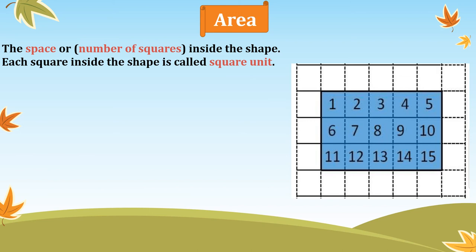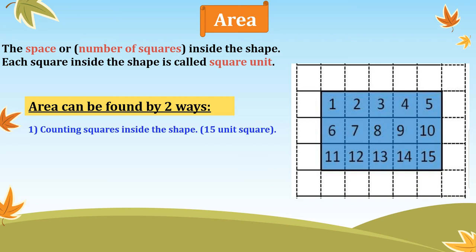How do we find the area of any shape? Area can be found in two ways. First way: counting the squares inside the shape. We count all the small squares inside the blue rectangle — there are 15. Each small square is called a unit square. So the area is 15 unit squares.